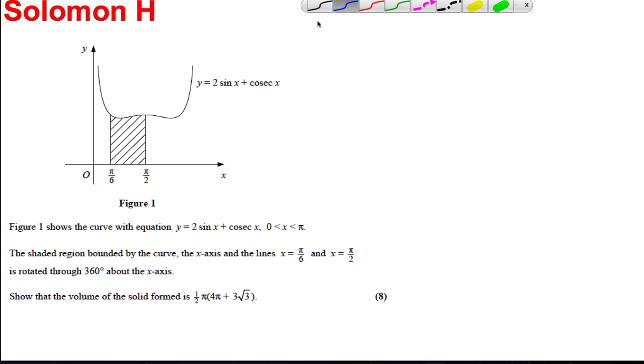The formula we're using is volume equals pi times the integral of y squared dx. So in this case, volume is pi times the integral between pi by 6 and pi by 2.